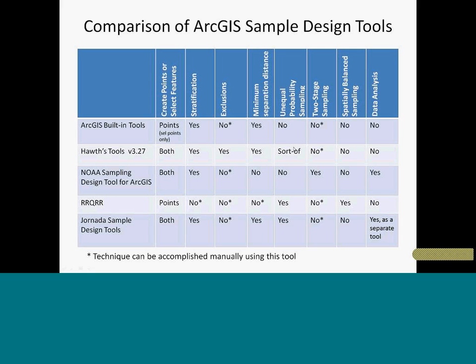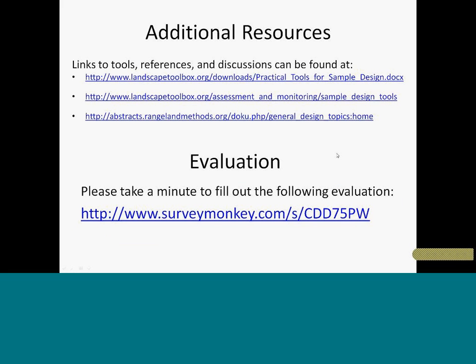I put together a comparison table of the different sample design tools we've looked at today in terms of what they can and can't do. ROCKER doesn't do stratification directly, but you can break your area into different polygons and run them individually to accomplish stratification the hard way. For HAWTH's Tools with unequal probability sampling, I put 'sort of' — it technically does it, but doesn't give you the selection probabilities, so it's not of a lot of use. The presentation will be made available for you to review. Please go to the link and fill out the evaluation, and I'm happy to entertain any questions or comments.